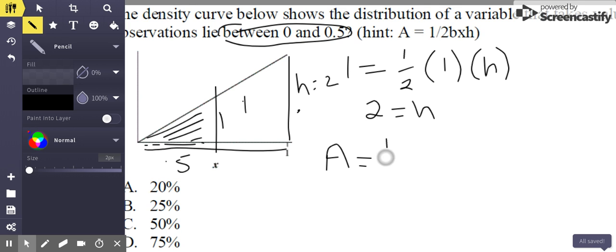So I'm looking for area. My equation is 1/2 times the base. My base again is 0.5. And my new height is half of the original height. So half of 2 is 1. So 1/2 times 1/2 times 1 is 0.25 or 25%. So your correct answer here would be B, 25%.